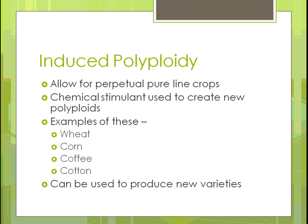Induced polyploidy allows for the perpetual use of pure line crops, created by selecting the best plants across many generations until you consistently get all good ones. A chemical stimulant is used to create new polyploids — referring to gene sets within the organism. This is used with crops like wheat, corn, coffee, and cotton, getting down to the gene level. This is a controversial area — taking genes from one organism and putting them into another — and it's what people are becoming really concerned about.